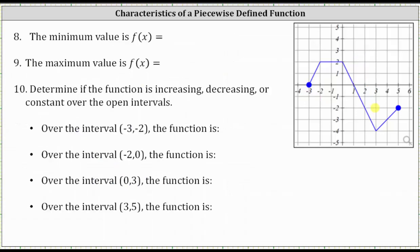Next, we're asked to find the minimum value of the function. To find the minimum value, we locate the lowest point on the graph. Notice how the ordered pair for this lowest point is 3, comma negative 4. So the minimum function value is the y-value of negative 4, which occurs at x equals positive 3.